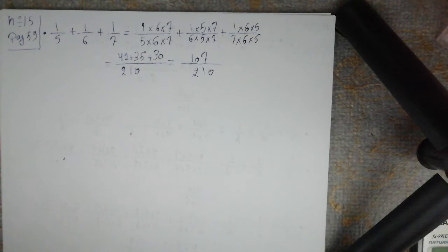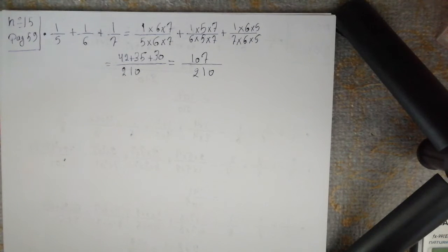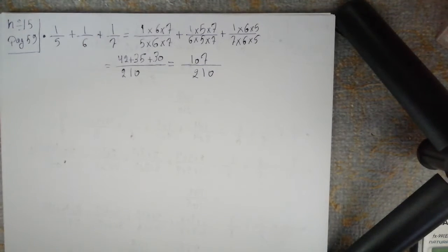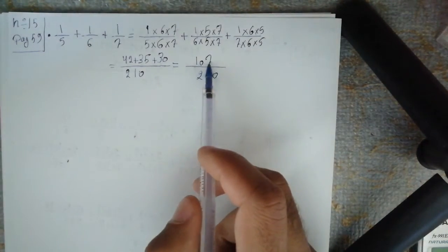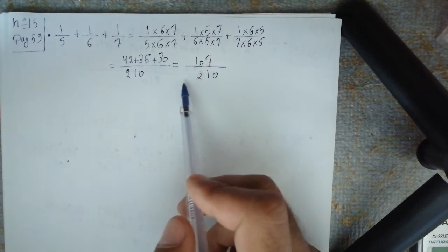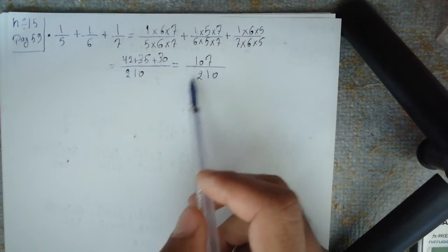107 divided by 6 has a remainder different from zero. It is not divisible by 7 since 107 divided by 7 has a remainder different from zero. It is not divisible by 8 since 107 divided by 8 has a remainder different from zero. Not divisible by 9 since 1 plus 0 plus 7 equals 8, and 8 is not a multiple of 9. And not divisible by 10 since the ones digit is different from 0. So 107 over 210 cannot be simplified.